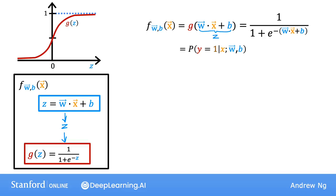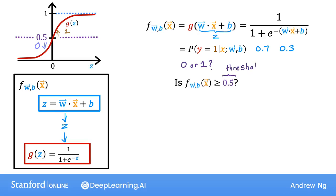This is going to be a number, like maybe 0.7 or 0.3. Now, what if you want the learning algorithm to predict whether y is going to be 0 or 1? One thing you might do is set a threshold above which you predict y is 1, and below which you predict y is 0. A common choice would be to pick a threshold of 0.5. So if f of x is greater than or equal to 0.5, then predict y hat equals 1. Or if f of x is less than 0.5, then predict y hat equals 0.